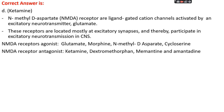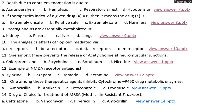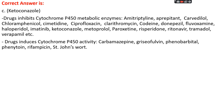NMDA receptor antagonists include ketamine, dextromethorphan, memantine, and amantadine. Question number thirteen: which therapeutic agent inhibits cytochrome P450 drug-metabolizing enzymes? Option A: amoxicillin, option B: amikacin, option C: ketoconazole, or option D: levamisole. The right answer is option C, ketoconazole. Drugs that inhibit cytochrome P450 metabolic enzymes include amitriptyline, aprepitant, carvedilol, chloramphenicol, cimetidine, ciprofloxacin, clarithromycin, fluvoxamine, haloperidol, imatinib, ketoconazole, metoprolol, paroxetine, risperidone, ritonavir, tramadol, and verapamil.